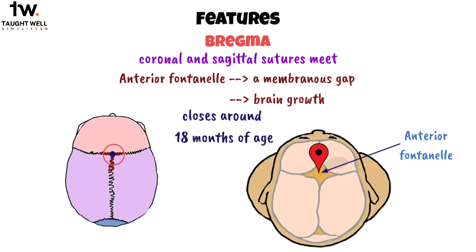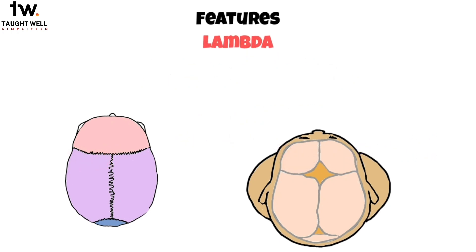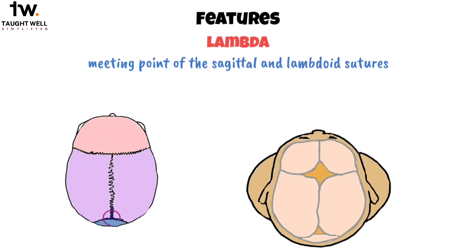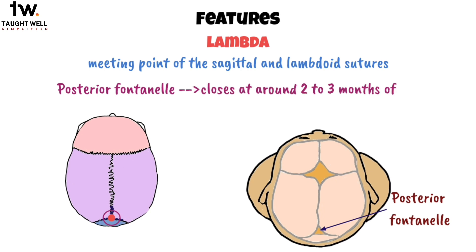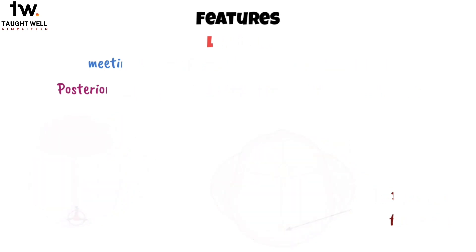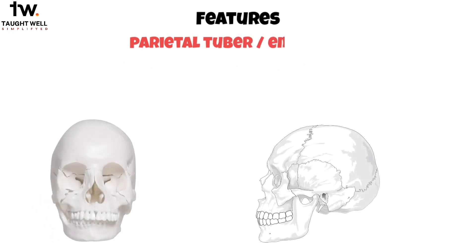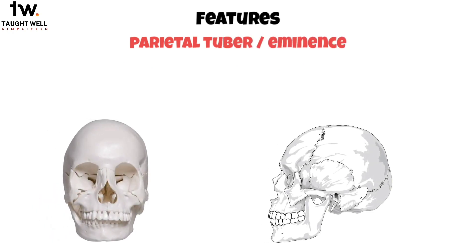Next up, we have the lambda, which is the meeting point of the sagittal and lambdoid sutures. In fetal skulls, you'll find the posterior fontanelle here, and it usually closes at around 2–3 months of age.